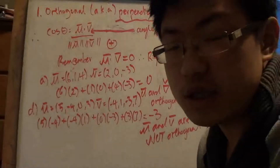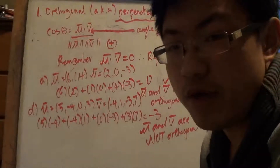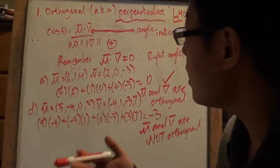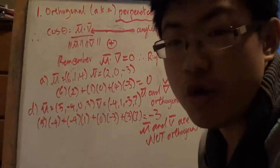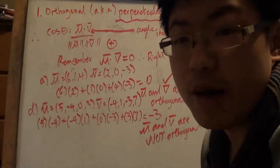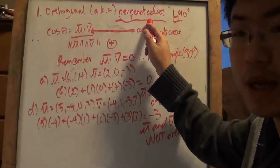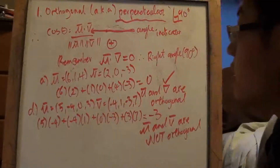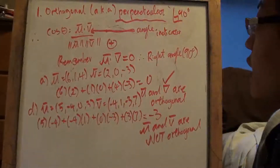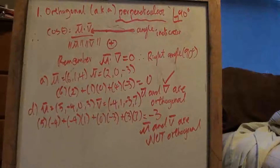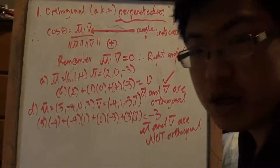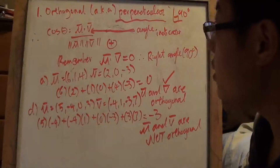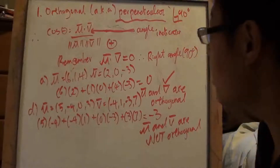Hi, this is section 3.3 for linear algebra. We'll be focusing mainly on whether vectors are orthogonal or not. That just simply means perpendicular. I don't know why they can't say that, but worst case scenario, if you forget the name, you could just say perpendicular. It's not wrong, just maybe not the term they want you to use in linear algebra.